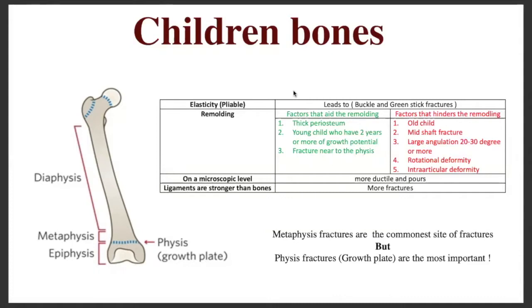The second property of children's bones is remodeling. Things that promote remodeling include: the thick periosteum around the bone, which is a thick connective tissue that helps in remodeling and fast healing; if a child has two or more years of growth potential, they'll have a higher remodeling rate; and fractures near the physis or growth plates will also have a higher remodeling rate.